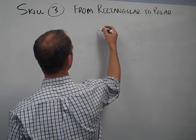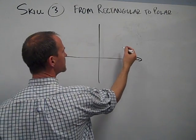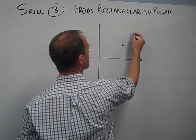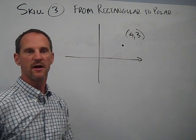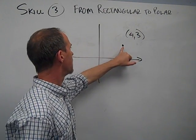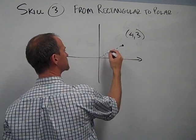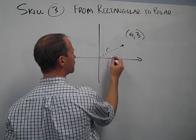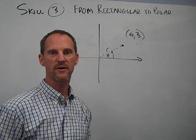So if I start off with my Cartesian coordinate system, and we start off with a fairly easy example, a point right here that's at 4, 3, that's our rectangular position for that point. I want to know what is the distance to that point from the origin, that's our r, and I also want to know what's the angle theta that will rotate to get us there.